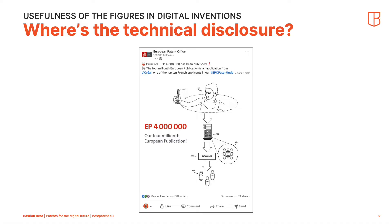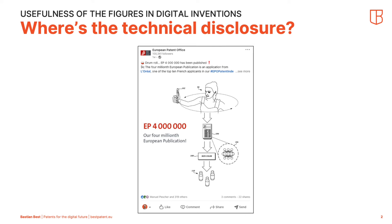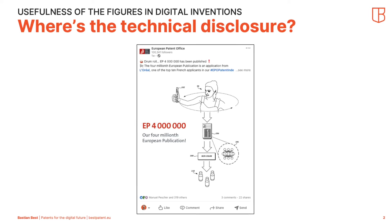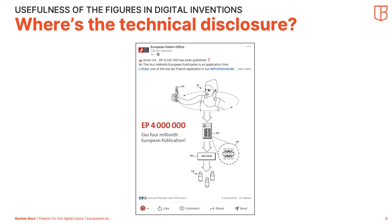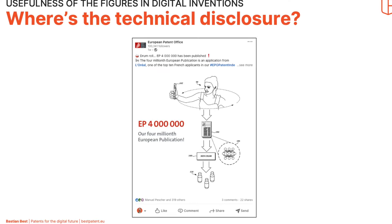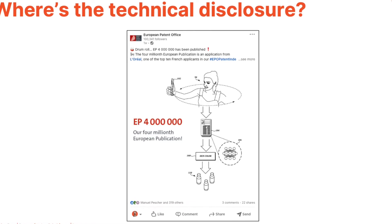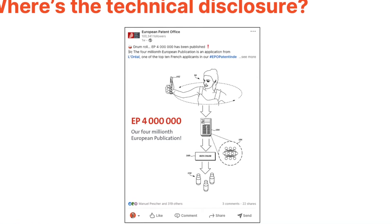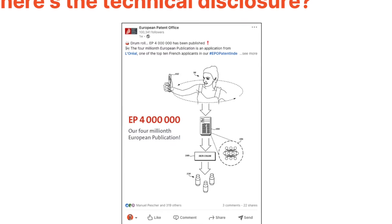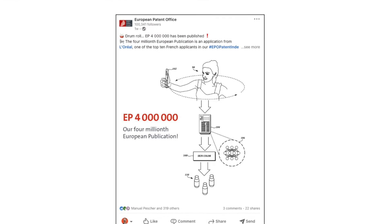On the other end of the spectrum is a prominent example: the 4-millionth European patent publication, which was published last week by the European Patent Office. This figure is very representative of the digital inventions we face in today's life. You can see a person taking a selfie with her smartphone, and then the selfie gets transferred to some kind of computer. The computer has a neural network running, and there's a box which says 'skin color' — because this patent application is about predicting skin color from pictures taken by end consumers.